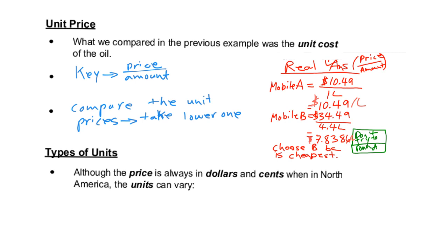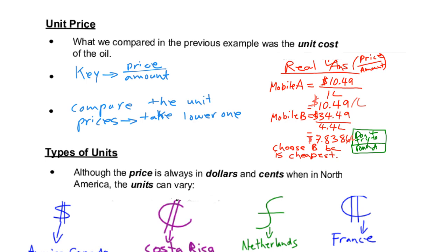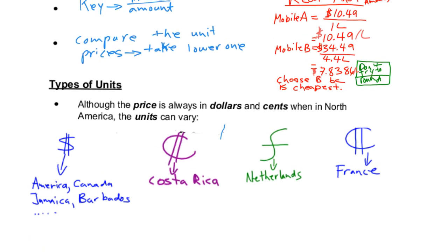The types of unit prices that we have found in the past are the following. In other places in the world, we usually use dollars and cents. But in certain places, like the ones we know, America, Canada, Jamaica, and Barbados, we use the dollar. In Costa Rica, we use the peso. In the Netherlands, we use the franc. And in France, we use the franc or the euro.